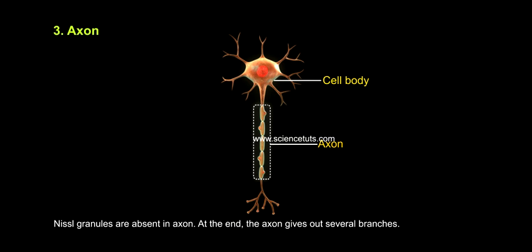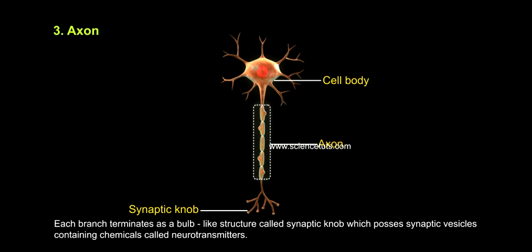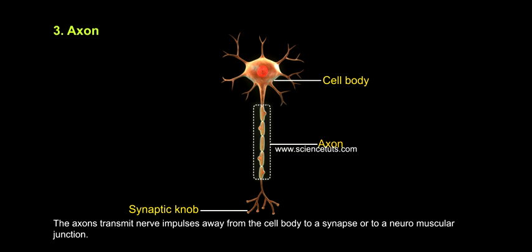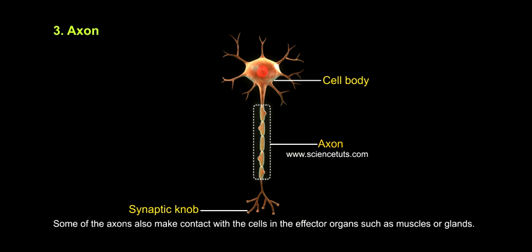At the end, the axon gives out several branches. Each branch terminates as a bulb-like structure called a synaptic knob, which possesses synaptic vesicles containing chemicals called neurotransmitters. The axon transmits nerve impulses away from the cell body to a synapse or to a neuromuscular junction. Some axons also make contact with cells in effector organs, such as muscles or glands.